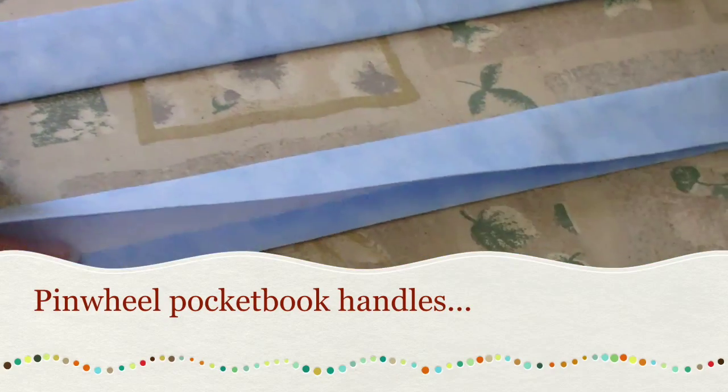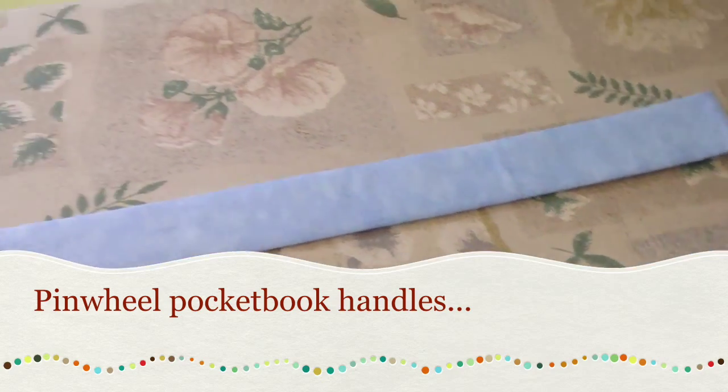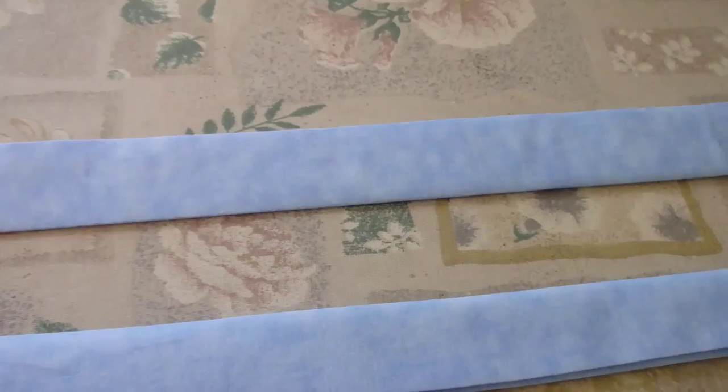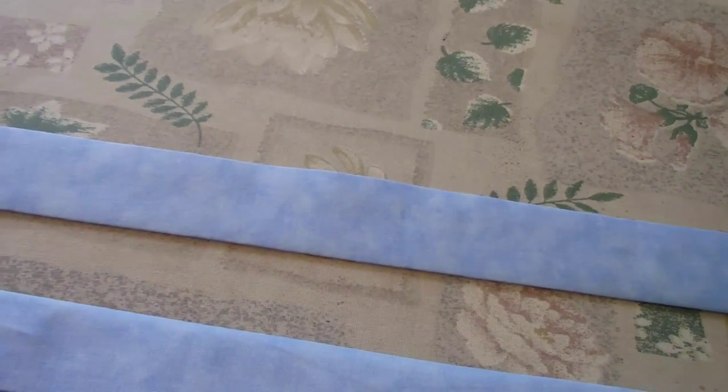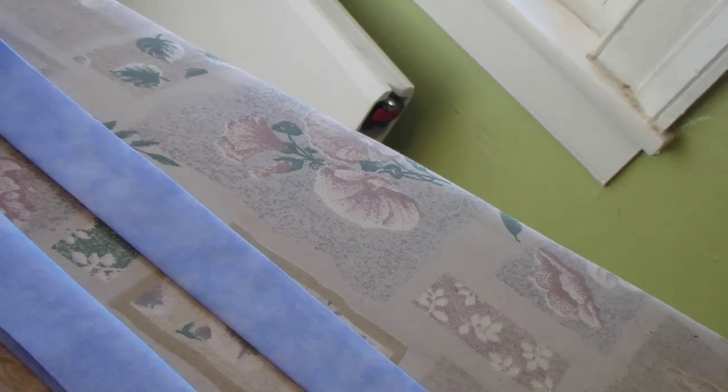I got the iron-on fleece ironed into the handles yesterday. I like it, so I just got to figure out how I'm going to stitch them. I've got them folded under on the end so I can put them on the outside, trying to make sure they are the same length. Don't want one longer than the other.